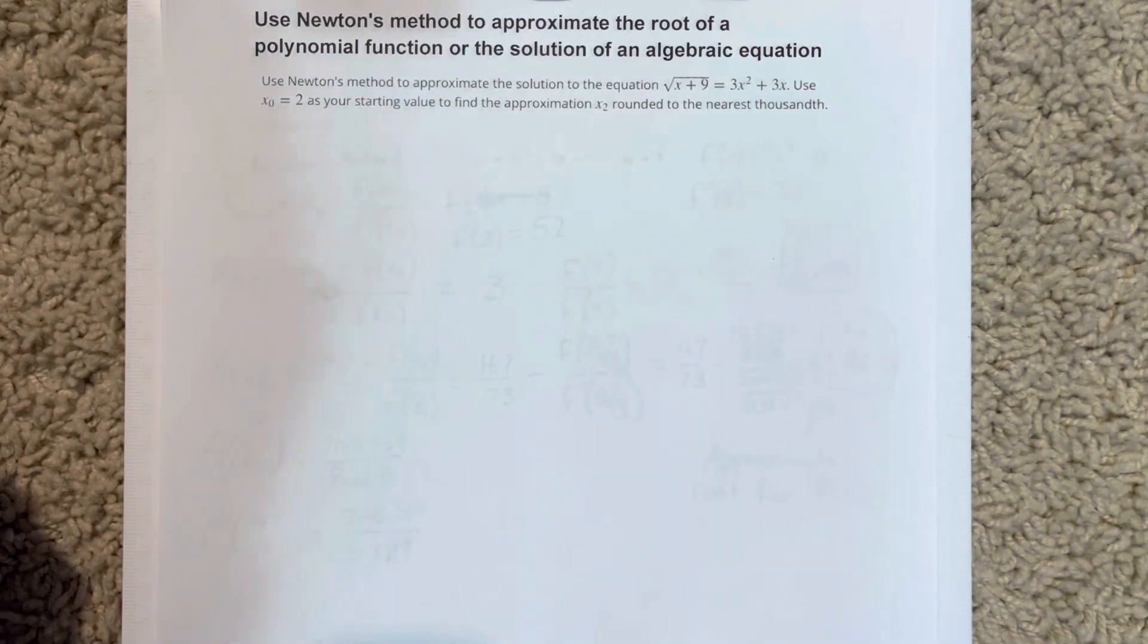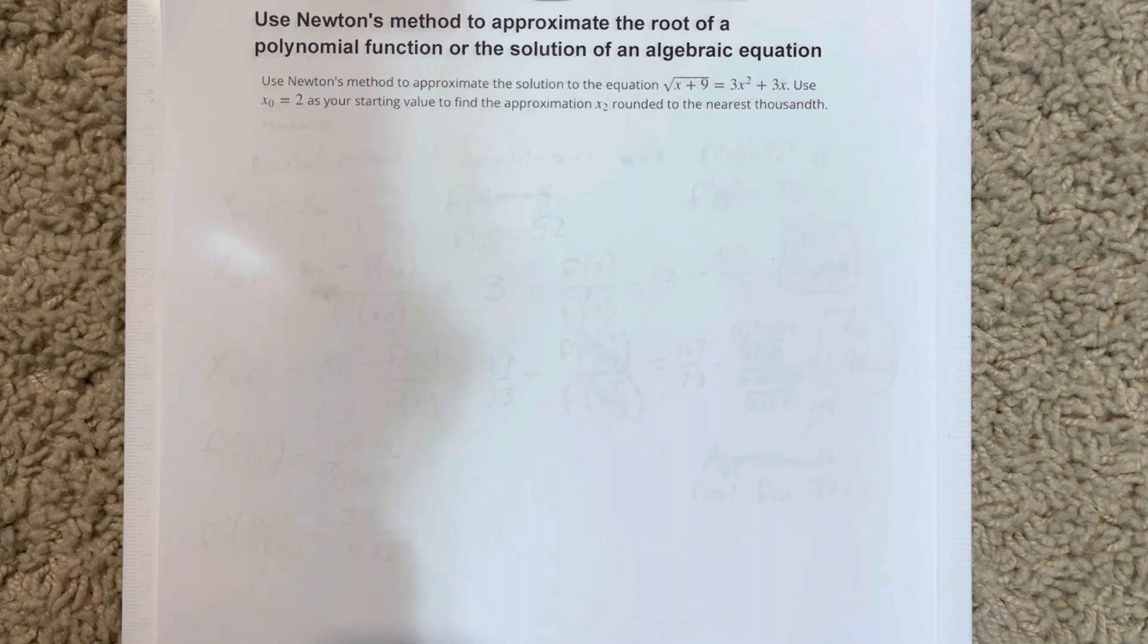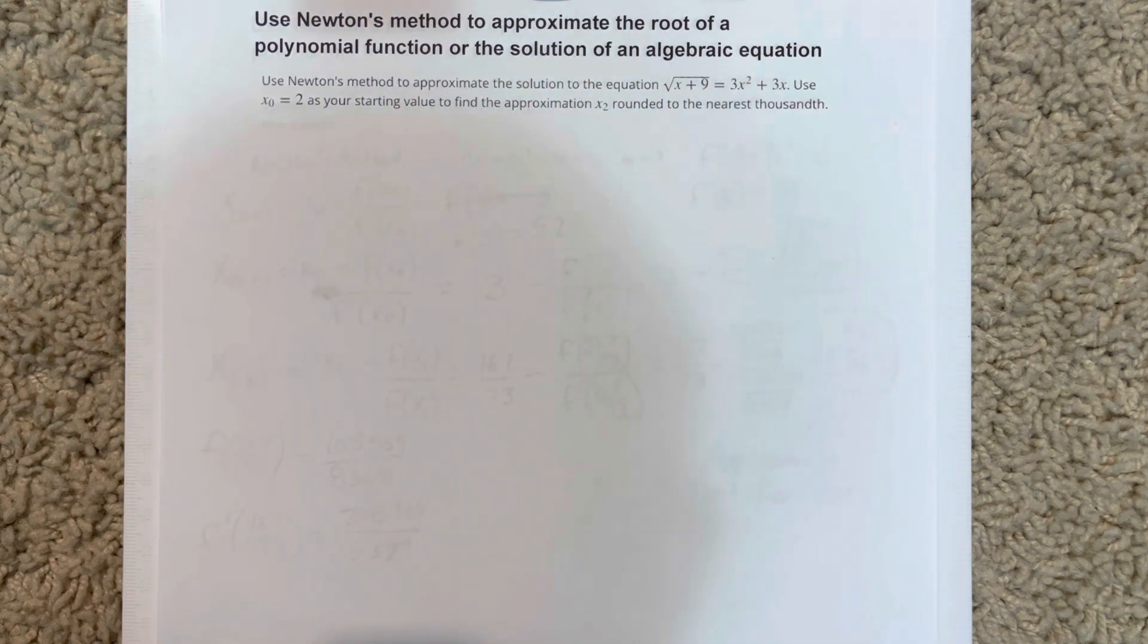In this video, we're going to use Newton's method to approximate the root of a polynomial function or the solution of an algebraic equation. It says use Newton's method to approximate the solution to the equation root x plus 9 equals 3x squared plus 3x. Use x0 equal to 2 as your starting value to find the approximate x2 rounded to the nearest thousandth.